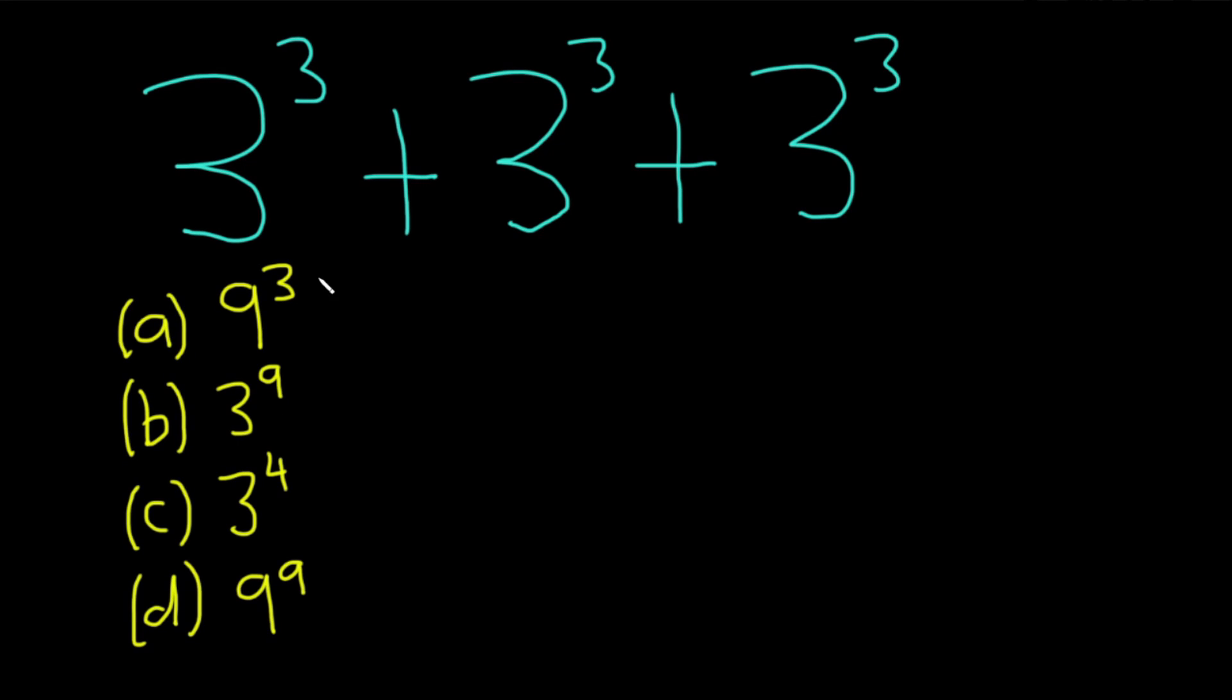So here we have an interesting problem. 3 cubed plus 3 cubed plus 3 cubed. And it's equal to one of these choices, and the other three are incorrect. So let's go through and just analyze each choice until we can find the correct one.